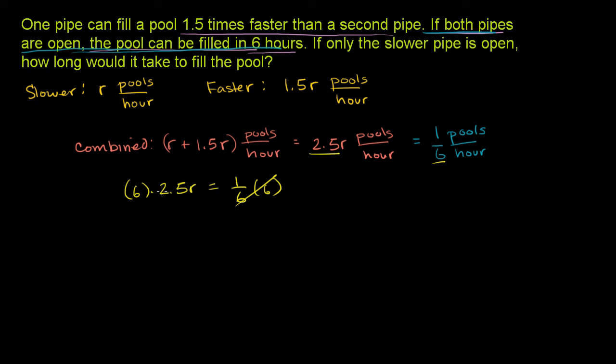This just becomes 1. This right over here, 6 times 2.5 is 15. So you get 15R is equal to 1, or R is equal to 1 fifteenth.